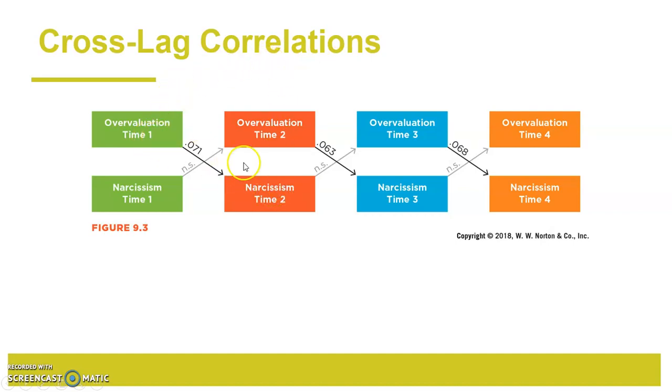These are called cross-lags, and you can see they're weak again, but they are there. The NS stands for non-significant. Because these cross-lags are significant going this direction with overvaluation first, narcissism second, and the narcissism and overvaluation not being significant, this suggests that the overvaluation comes first, and then next in time comes the narcissism.